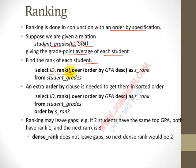The SQL syntax for ranking is: select ID, rank() over (order by GPA desc) as s_rank from student_grade. GPA is ordered in descending order. The result is aliased as s_rank.